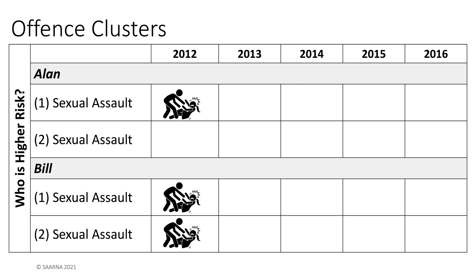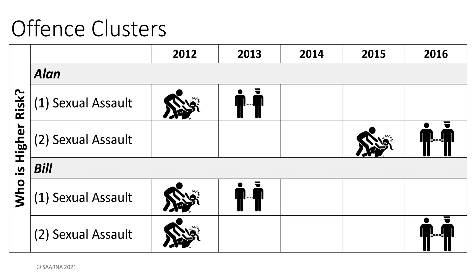Alan committed one sexual assault in 2012. Bill committed both of his sexual assaults in 2012. Both were arrested in 2013, but Bill was only arrested for one of his sexual assaults. Alan and Bill then served their time and were released. In 2015, Alan committed his second sexual offense, leading to his arrest in 2016. Bill was also arrested in 2016, but for the previously undetected sexual assault in 2012.